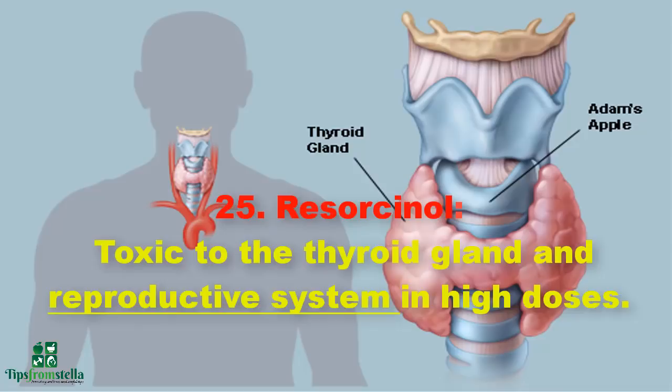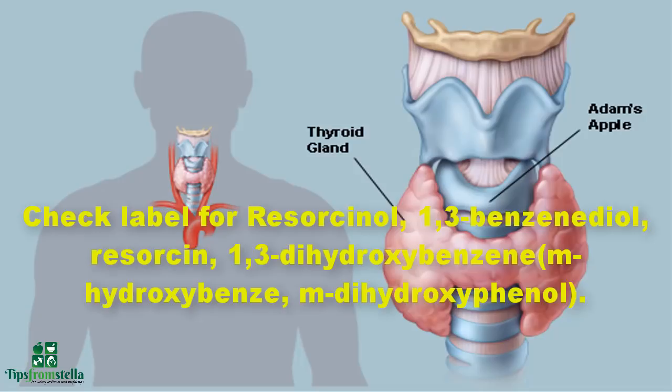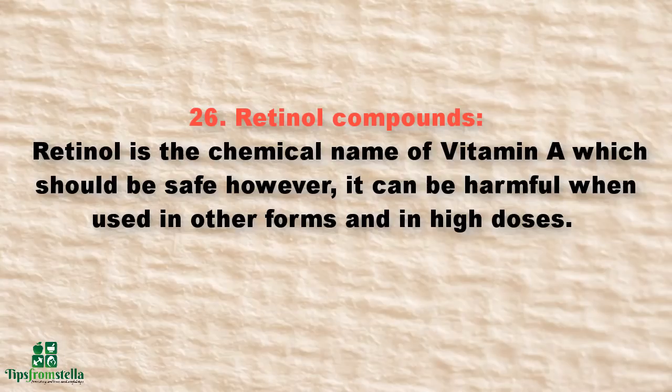Number twenty-five: resorcinol. It is toxic to the thyroid gland and reproductive system in high doses. Mainly used in hair dyes, pills, and in products used to treat acne, eczema, and psoriasis. Check label for resorcinol, 1,3-benzenediol, 1,3-dihydrobenzene, also known as m-hydroxybenzene or m-dihydroxyphenol.